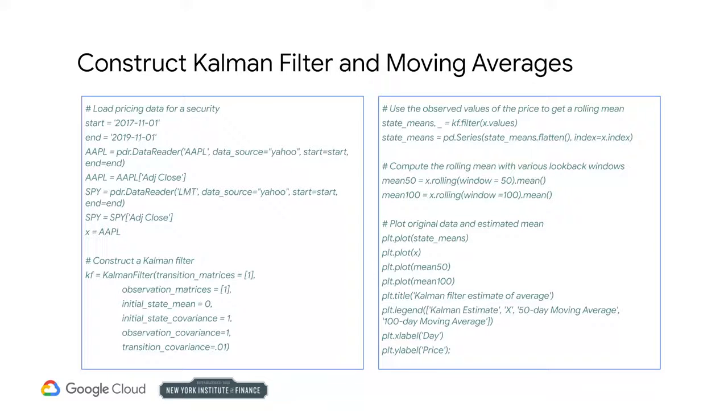Please use the code above to load pricing data, construct a Kalman filter, and calculate the rolling mean of prices for Apple. Keep in mind that we are assuming the transition and observation matrices are equal to one and the initial state is assumed to be zero.